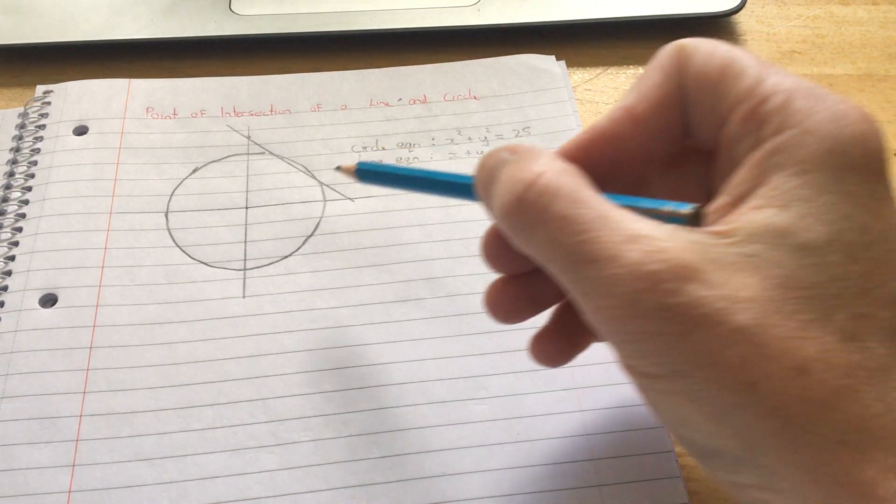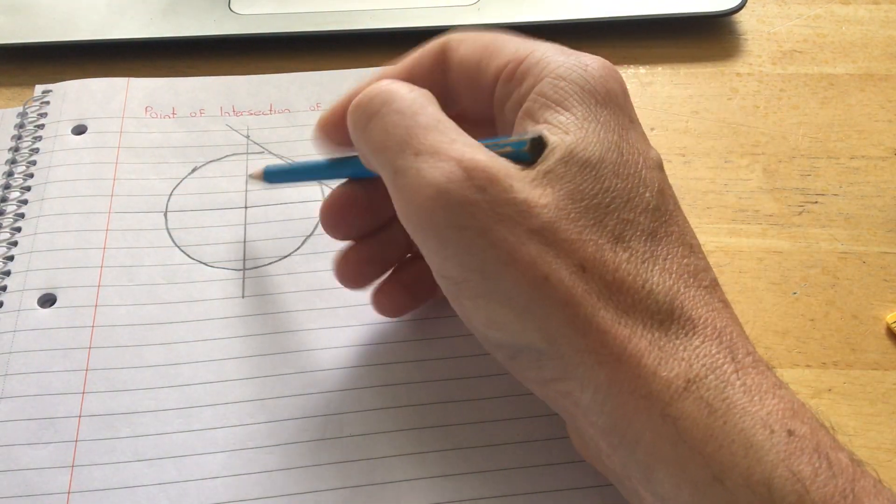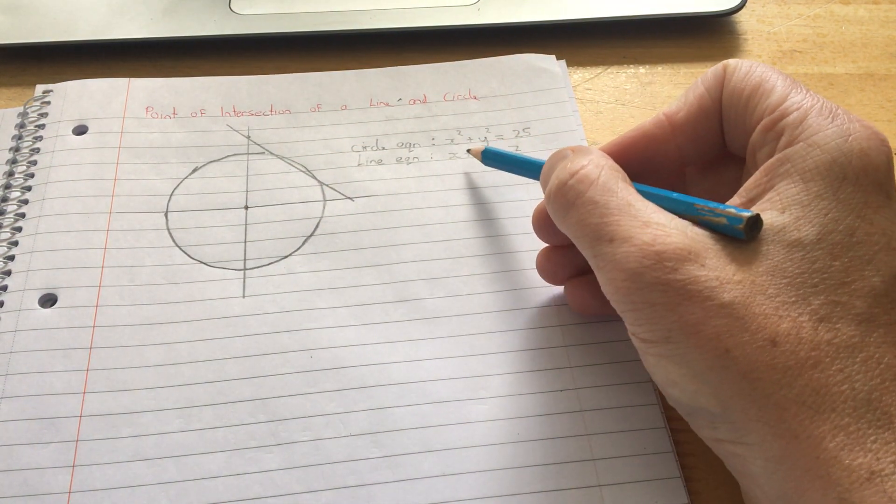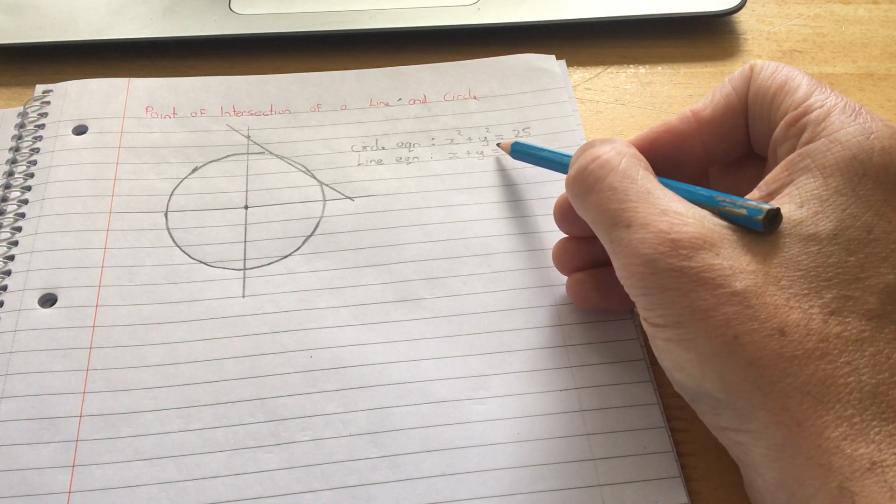In this particular question here, here's a circle. The center of the circle is 0, 0, and the radius is 5. That's the equation of the circle, x squared plus y squared equals 25.